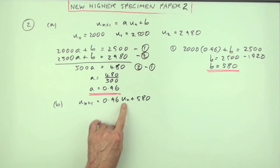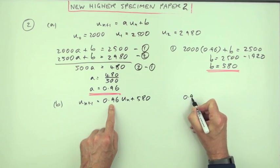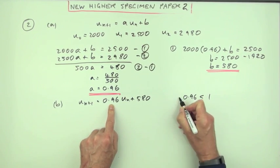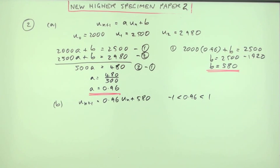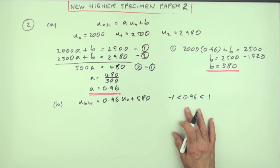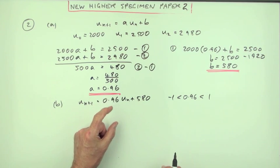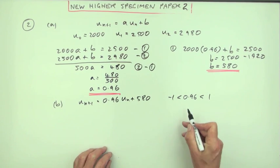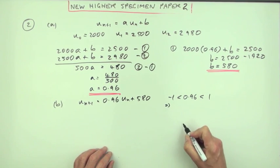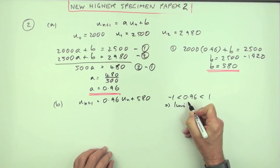Now the multiplying number is a proper fraction. That number 0.96 is less than 1 or greater than negative 1. In other words, it's a proper fraction. And when you multiply by a fraction, those numbers will get smaller. So since that's the case, that means that a limit exists.